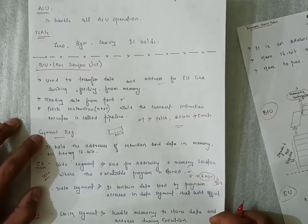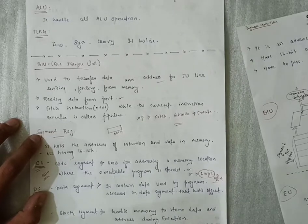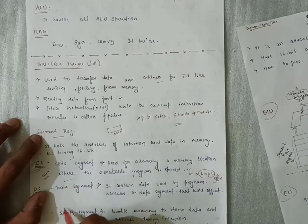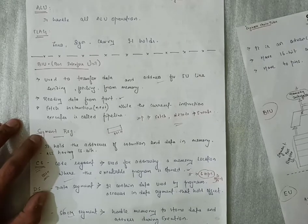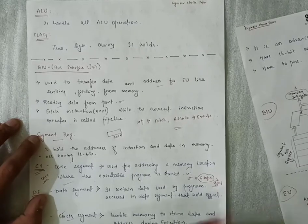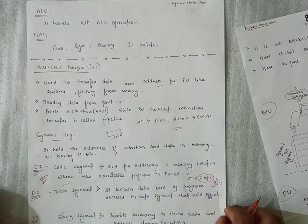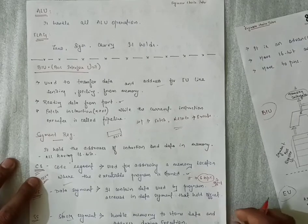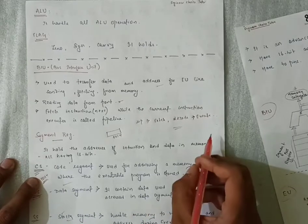After that, the last segment register is the Instruction Pointer, that is IP. It is also a 16-bit register, used to hold the address of the next instruction to be executed. This is the main function and the main register of the 8086 — it holds the address of the next instruction.